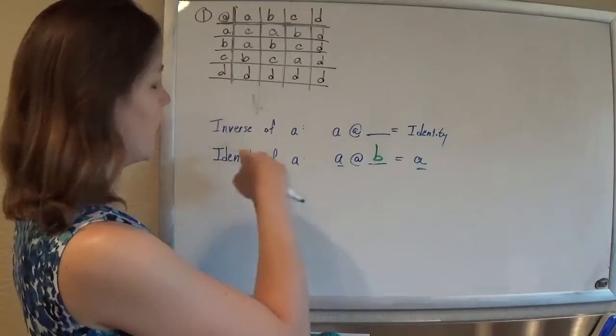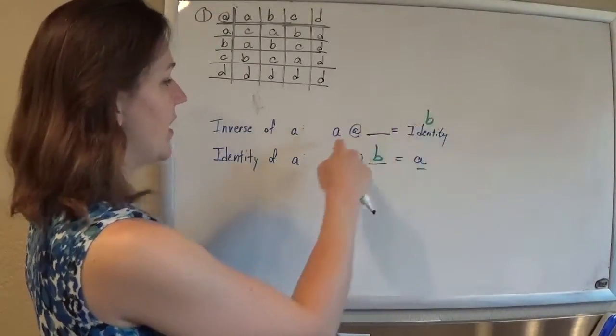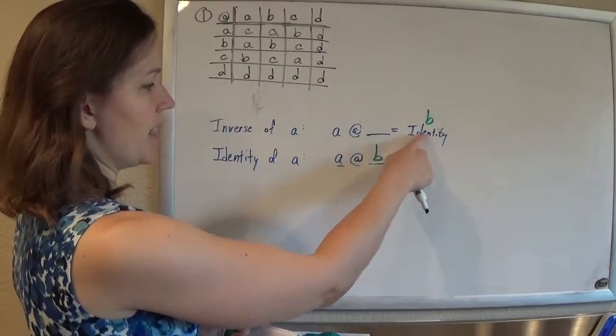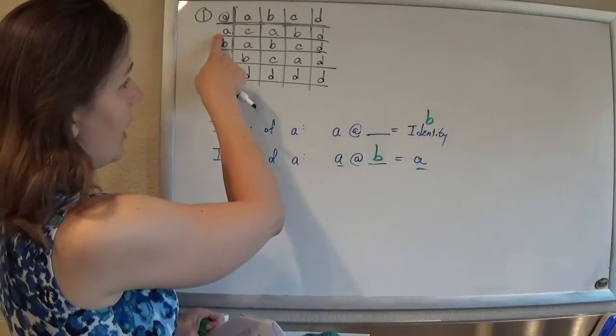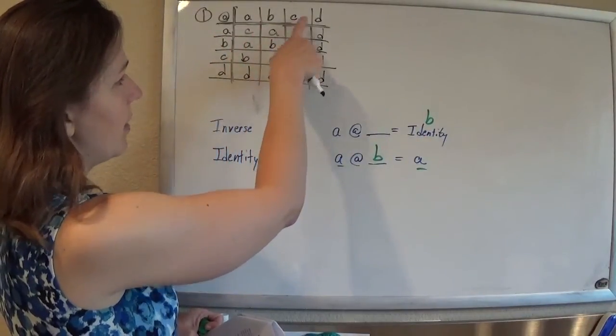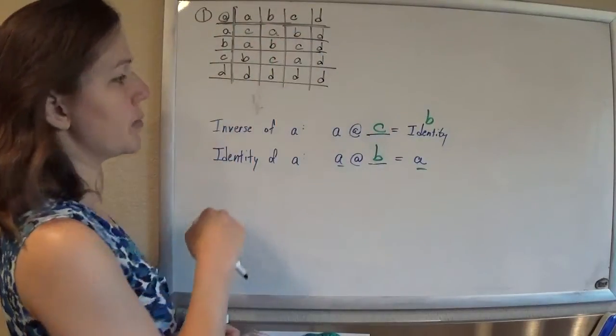So now, to find the inverse, I need to find out what I can do to A that'll give me the identity. So what can I do to A to give me B? What can I do to A to give me B? Ah, that's C, because A at C gives me B.